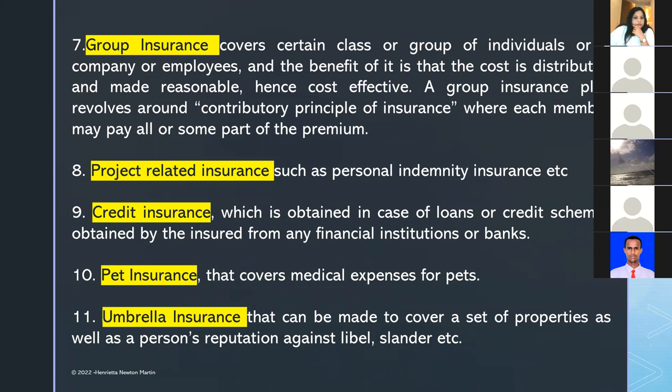Umbrella insurance provides broad coverage for a set of properties as well as a person's reputation against libel or slander. Libel and slander fall under defamation law — defamation involves conversation or writing that defames or passes derogatory remarks about a person. Verbal defamation constitutes slander; written defamation constitutes libel. Under umbrella insurance, a company's goodwill or an individual's reputation can be protected against such acts.